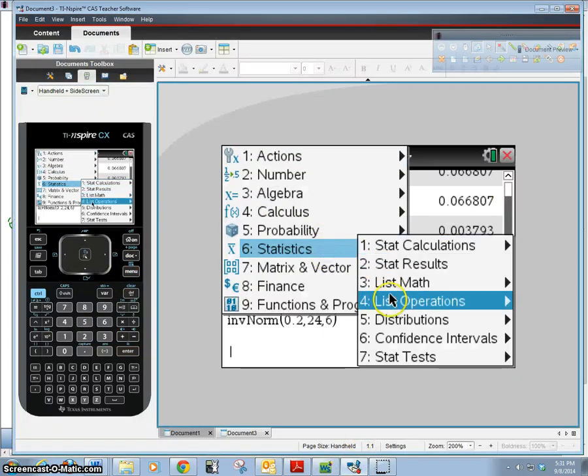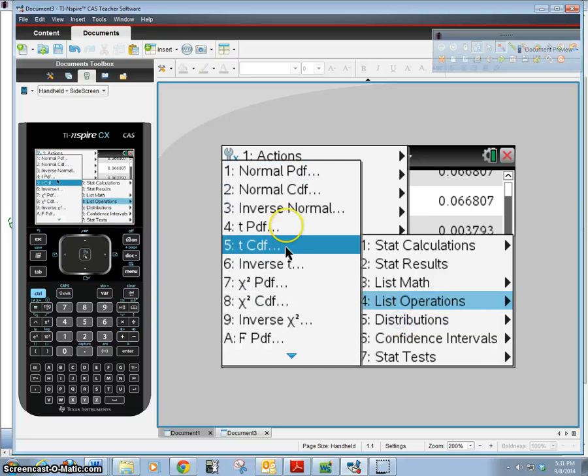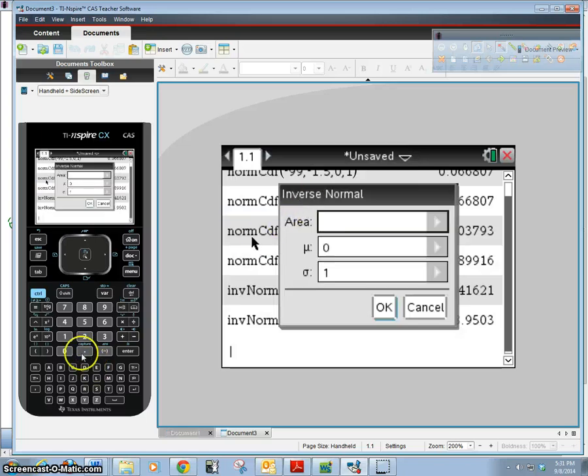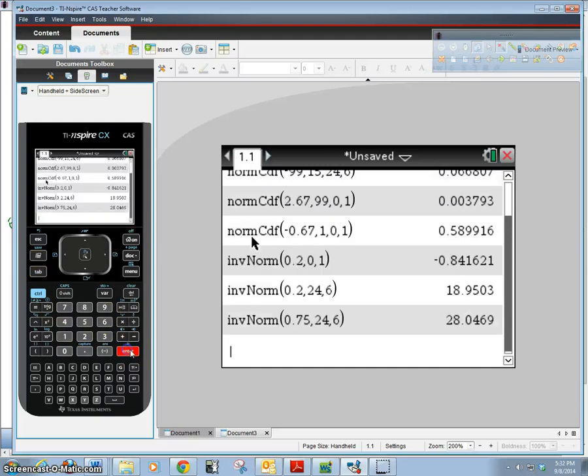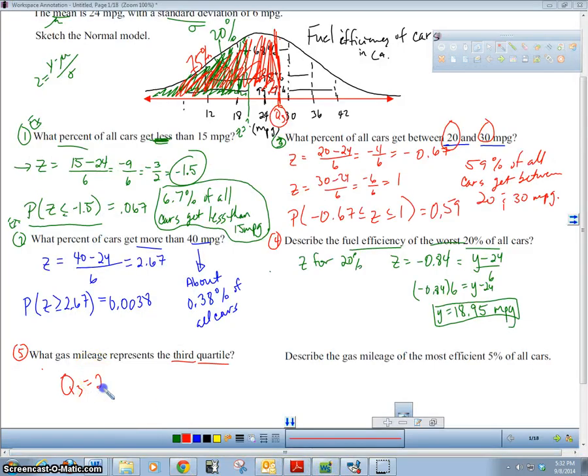Let's compute that using our calculator. Q3, so inverse norm, inverse normal. Our area is 75 percent, our mu is going to be 24, and our sigma is 6. 28.04. We'll round that up to 28.05 miles per gallon.